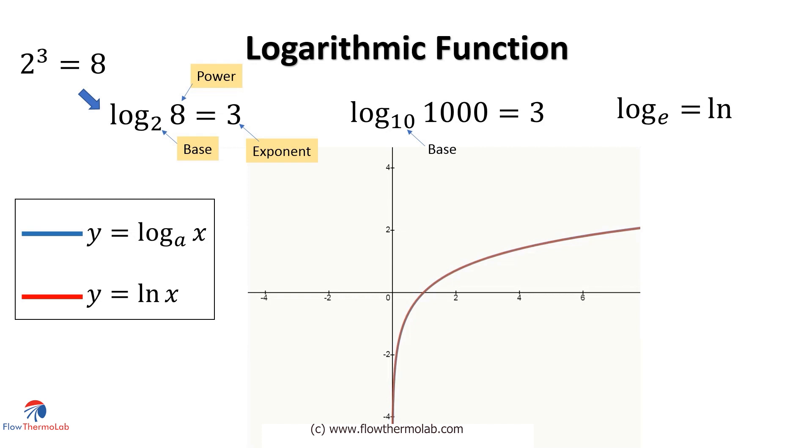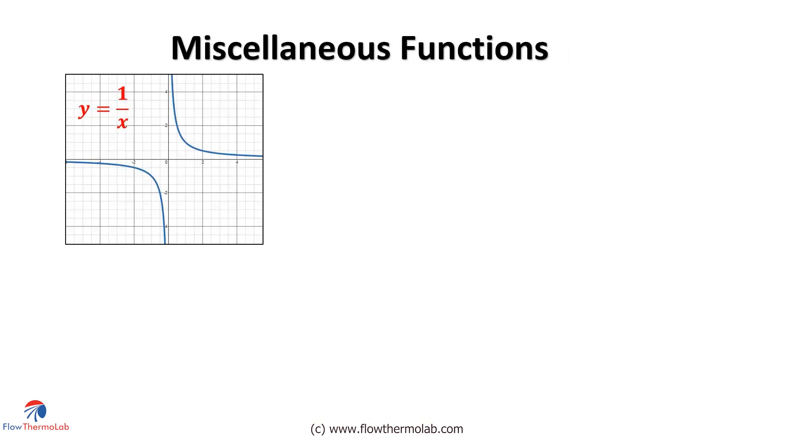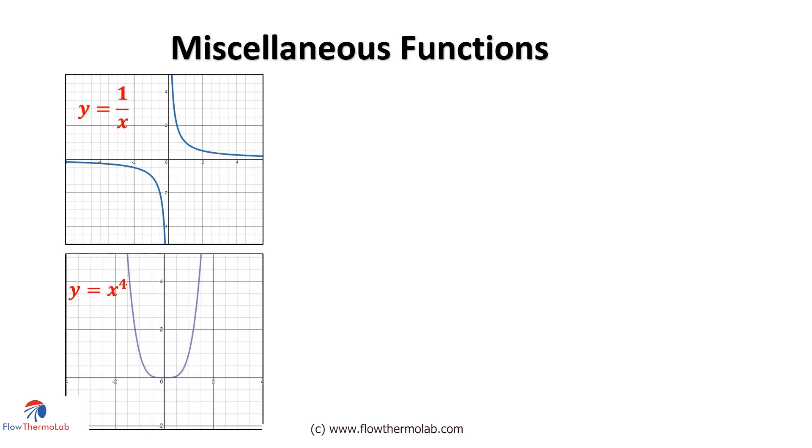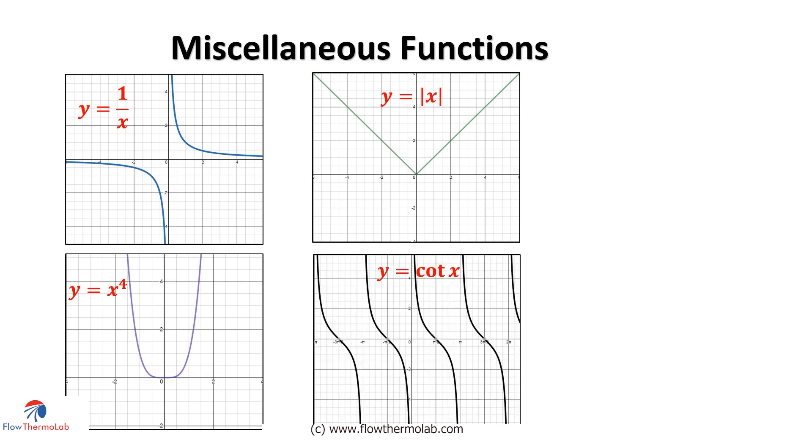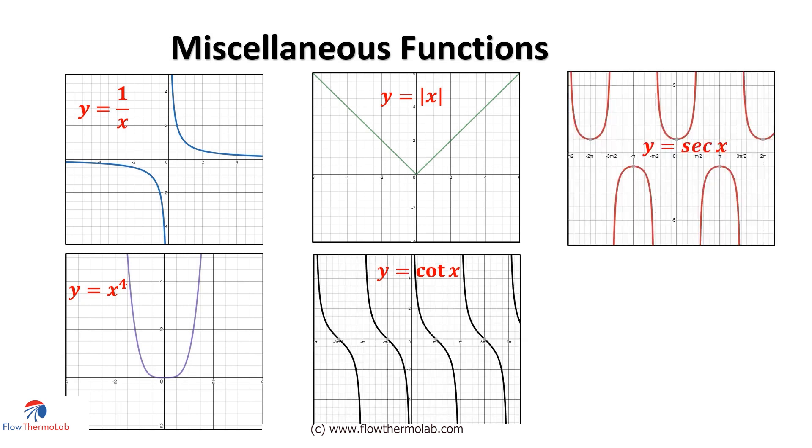These are all the major functions which you must know as an engineer or an engineering student. Now we can also have a look at some of the miscellaneous functions like 1 by x, y equal to x raise to 4, whose value is always positive, very small near the origin and increases rapidly away from the origin. Another function, the mod x, which gives only positive value as the output even for negative x values. Then we have the cotangent which is 1 by tan x, secant, and finally cosecant x.